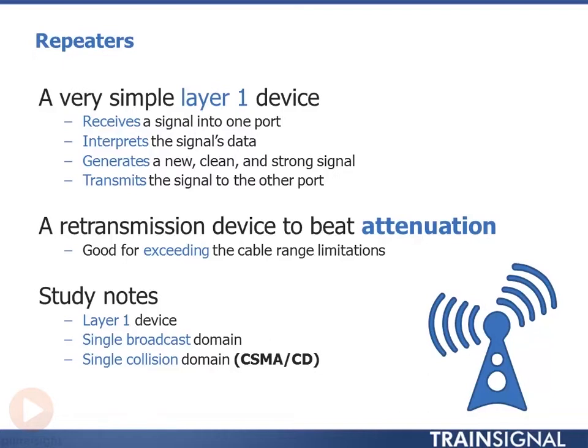Very simple early repeaters were just two ports — in and out — and they were used to extend the cable itself because of a problem called attenuation. Basically, as you send a signal down a wire it degrades immediately, starts falling off, and there's a point where it's no longer understandable at the other side. So rather than making sure everything was really close together, which isn't always possible on a campus network or school, you'd put a repeater in there.